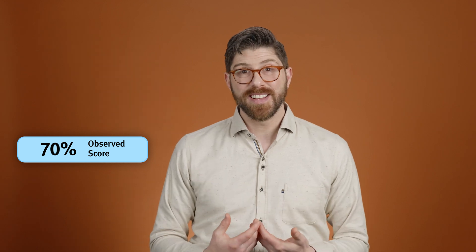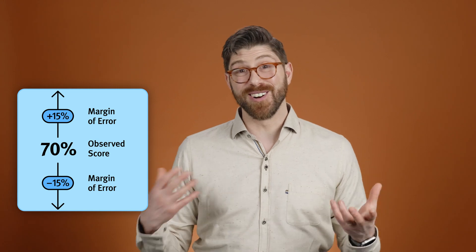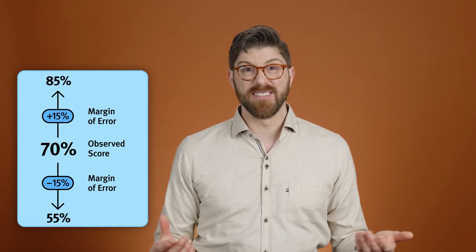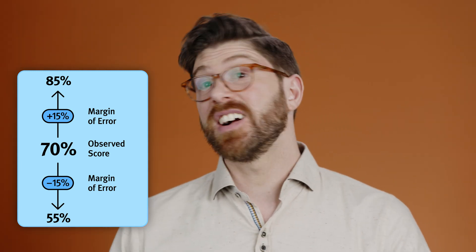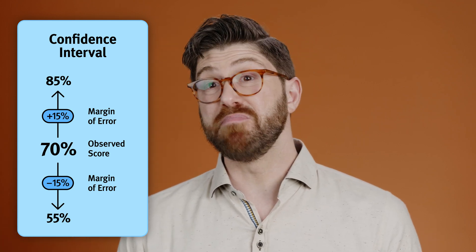We can calculate that uncertainty around our measurement, and that's called the margin of error. Even though I measured 70% of dogs have floppy ears, I might have a 15% margin of error, which means the true number of floppy-eared dogs in the world could be anywhere from 55% to 85% — we don't know for sure. We call that range a confidence interval. It's just twice the margin of error, including both the plus and minus sides.